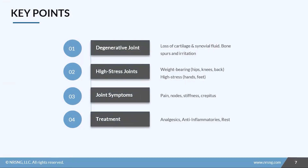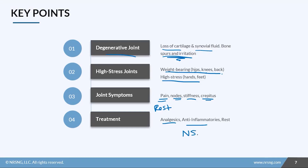Let's do a quick recap of osteoarthritis. It is a degenerative joint disease that is progressive and involves a loss of cartilage and fluid around the joints, as well as irritation of the bones and bone spurs. It most commonly affects high-stress joints like hands and feet, or weight-bearing joints like the hips, knees, and back. Patients will have joint pain usually relieved with rest, Heberden's and Bouchard's nodes, stiffness, and crepitus in the joints. We want to give analgesics and anti-inflammatory medications — NSAIDs are really good for this — and provide frequent rest periods to help alleviate symptoms.